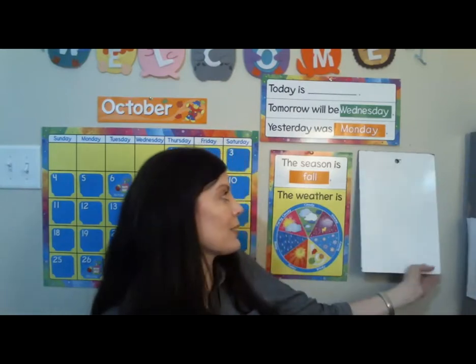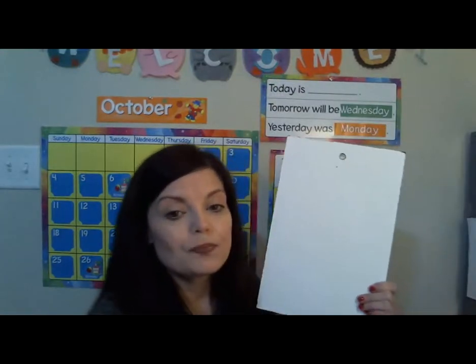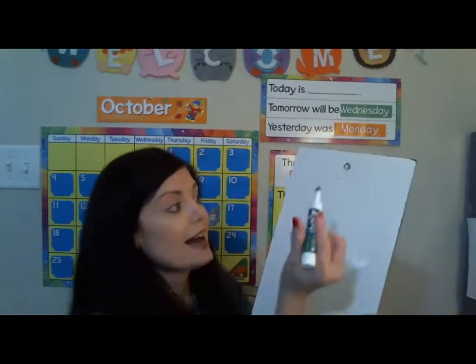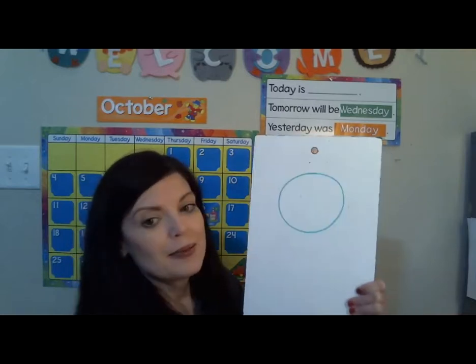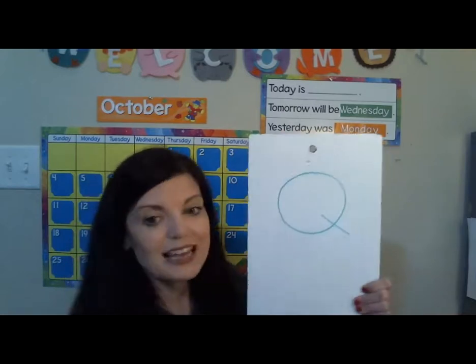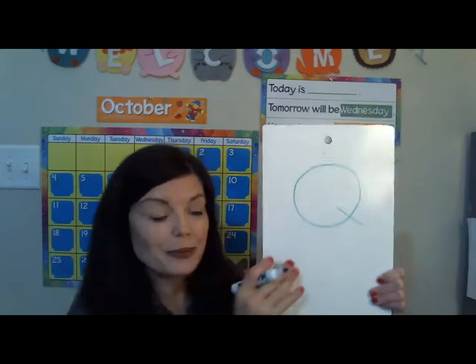And our letter for today is the letter Q. Q looks like this. There are two for every letter in the alphabet — there's an uppercase and a lowercase letter. Let's learn how to write it. So Q looks a lot like O. You're going to make an O and then give it a tail. So here's Q — make an O and give it a tail. That looks pretty easy, right?